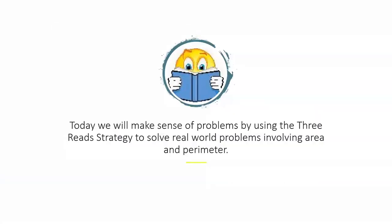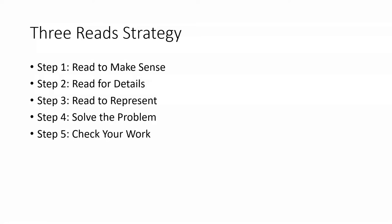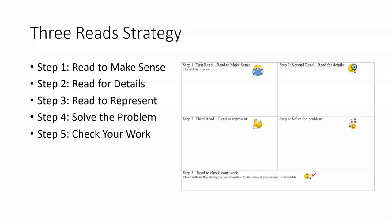The three-read strategy involves five steps to help you make sense of and solve problems. Step 1: Read to make sense. Step 2: Read for details. Step 3: Read to represent. Step 4: Solve the problem. Step 5: Check your work. This organizer can be used to help you organize your thinking.